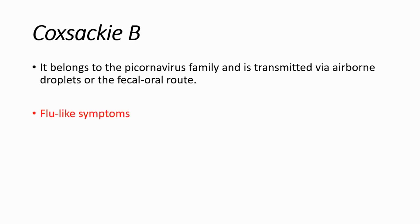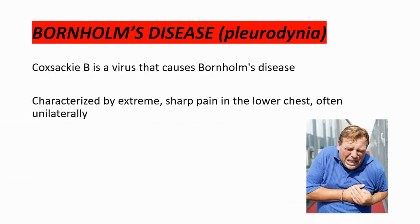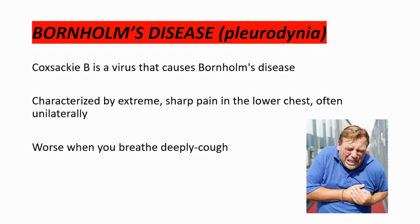Sometimes Coxsackie B can cause Bornholm's disease, also known as pleurodynia. This condition is characterized by extreme sharp pain in the lower chest, often on one side. The pain is worse when you breathe deeply or cough. X-rays in these patients are generally normal.